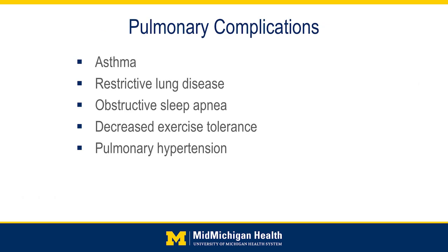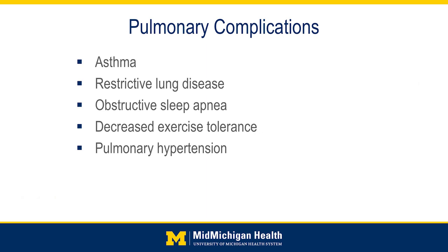There are various pulmonary complications related to obesity. Asthma is very common and obesity acts as a restrictive lung disease where excess weight on the chest limits the lungs' ability to expand. The prescribed treatment for obesity is exercise, but obesity leads to decreased exercise tolerance — a vicious cycle where patients can't exercise, gain weight, and can exercise even less. Sleep apnea is very common in patients with obesity; many people in the audience may use a CPAP machine.